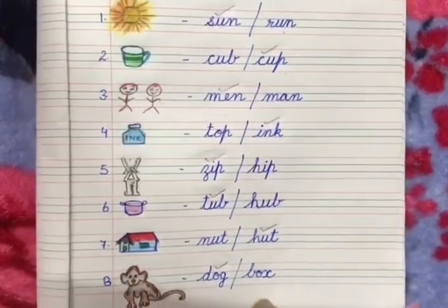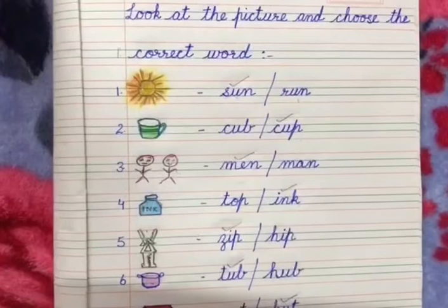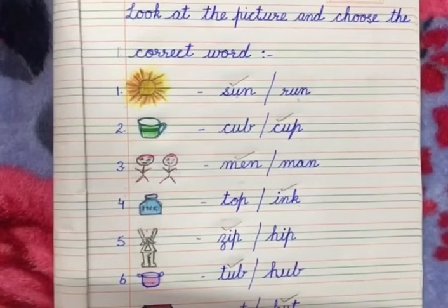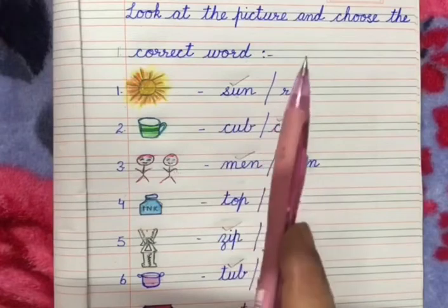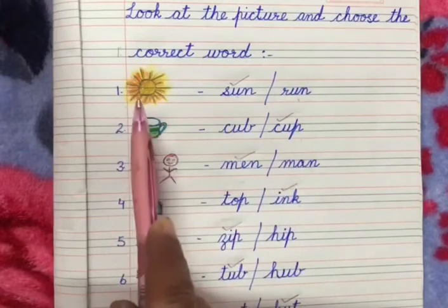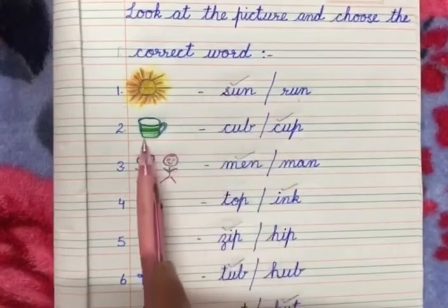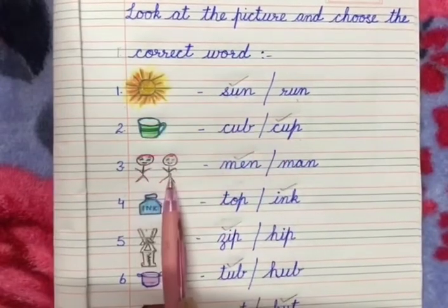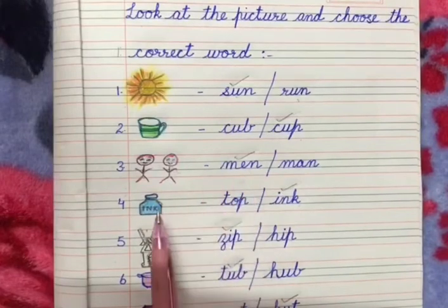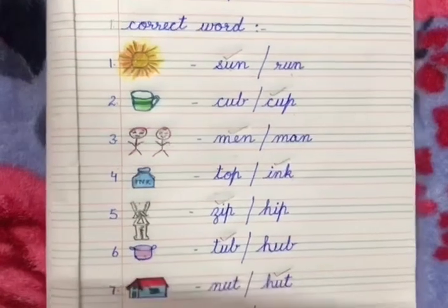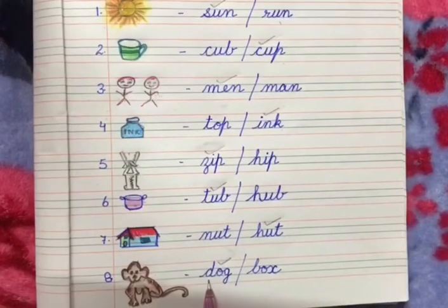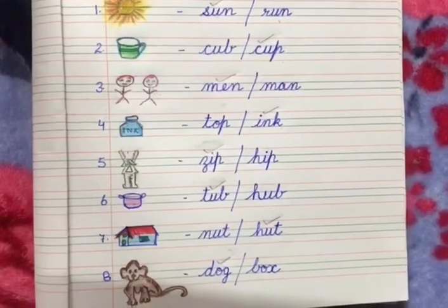Let us revise once again. The topic is: look at the picture and choose the correct word. For each picture two words are written and we have to choose the correct word. So the answers are: first one is 'sun', second one 'cup', next 'men', then 'ink', 'zip', 'tub', 'hut', and 'dog'.